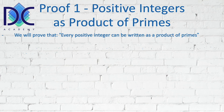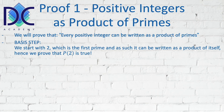The basis step is quite simple. We start with the number 2, which is the first prime number, and it can be written as a product of itself. So we prove that P(2) is true — for the first prime number we can already prove the basis step.